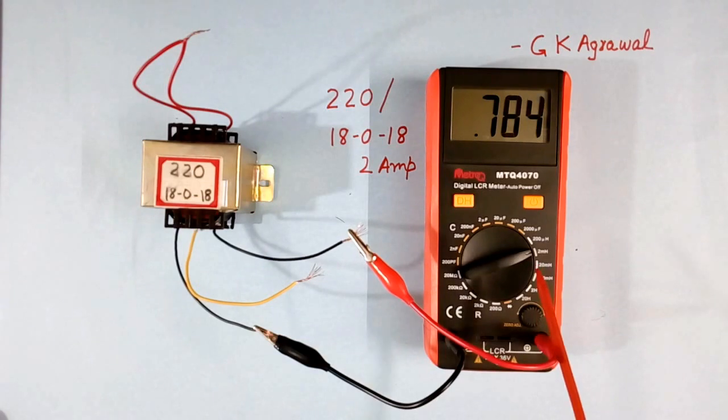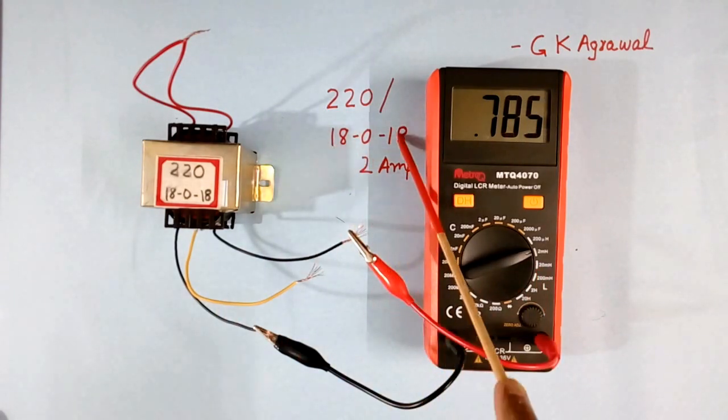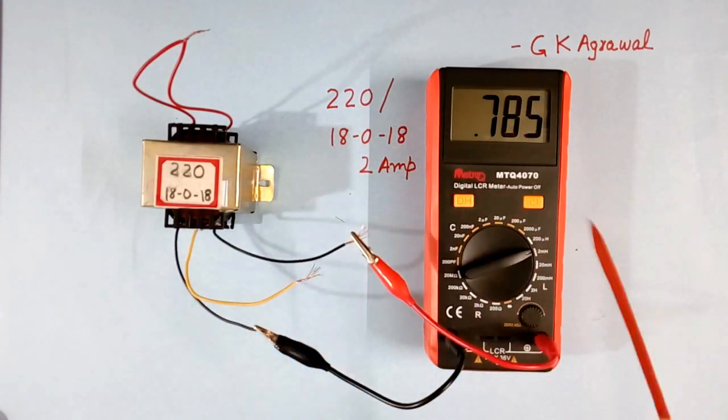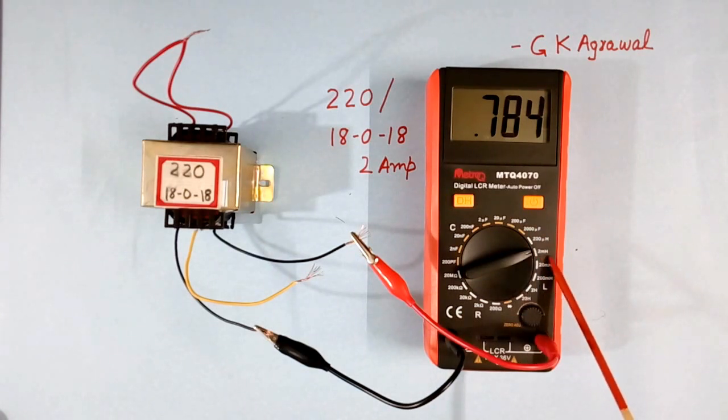I have connected my LCR meter across 18 and 18, these two black wires. My scale is 2 millihenry. So the value of L is coming 0.784 millihenry.